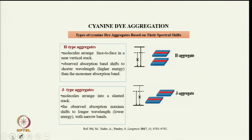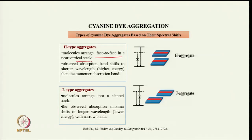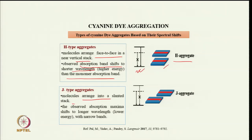UV visible spectroscopy can also be used to study cyanine dye aggregation. Different kinds of aggregates show different spectral shifts. There are two types: H-type aggregates, where molecules arrange face-to-face in a near-vertical stack — the absorption band shifts to shorter wavelength than the monomer. J-type aggregates have a slanted arrangement.